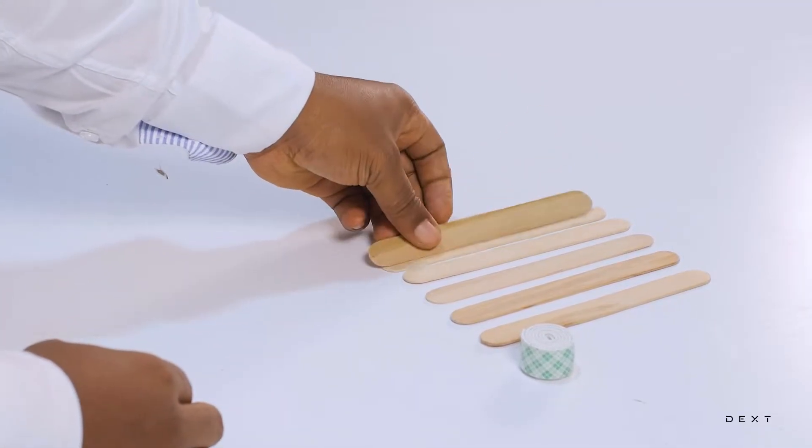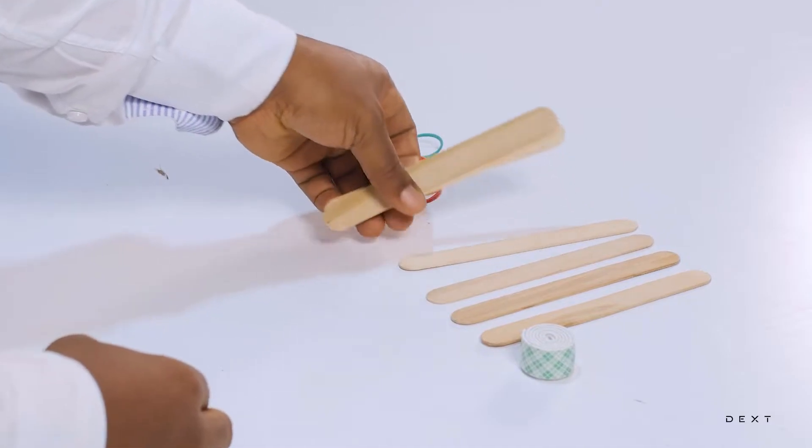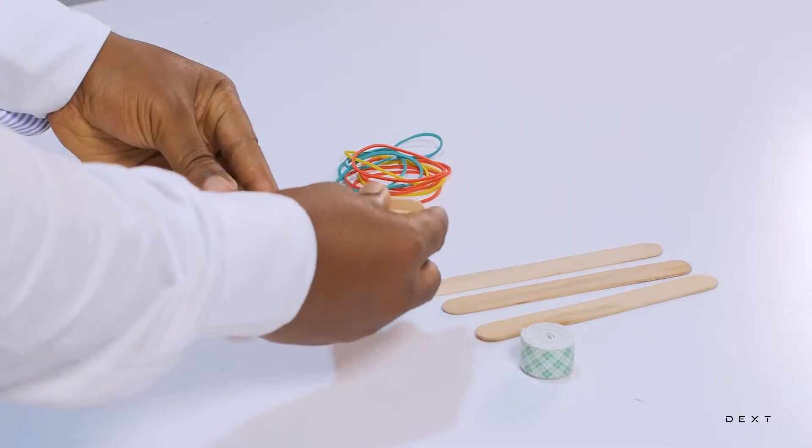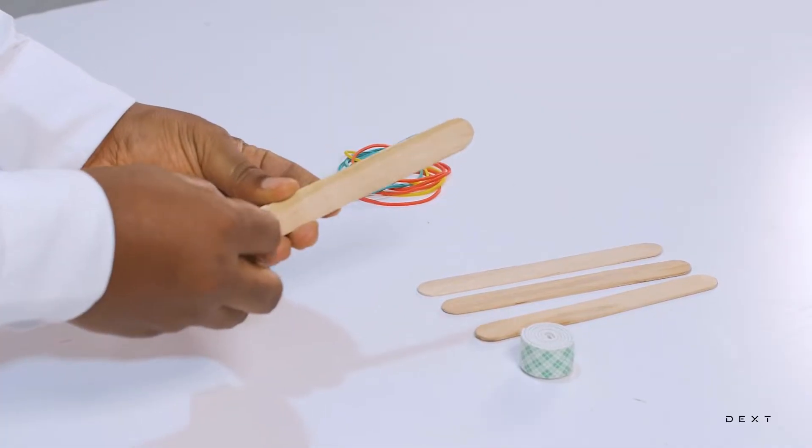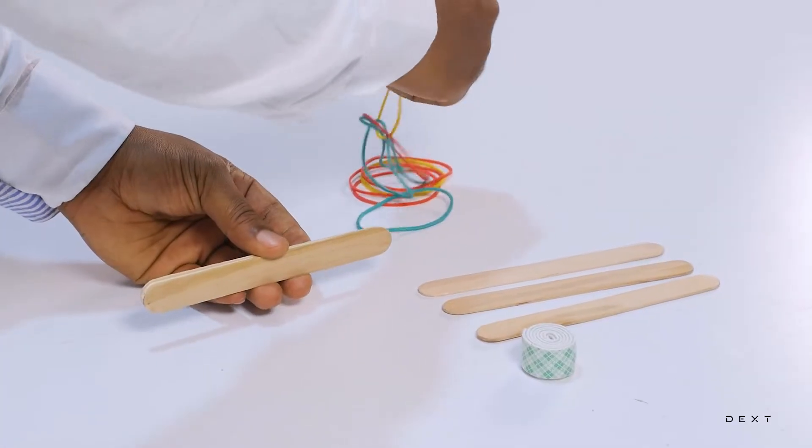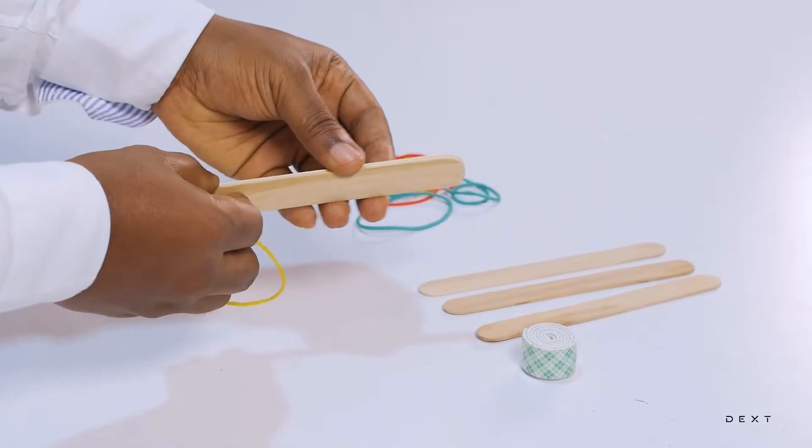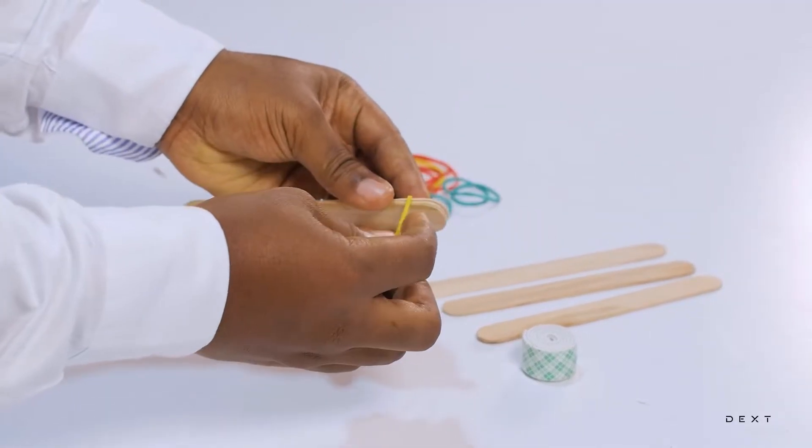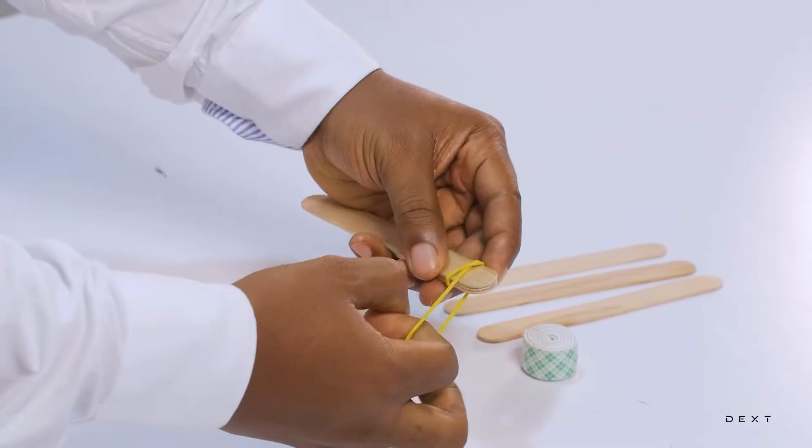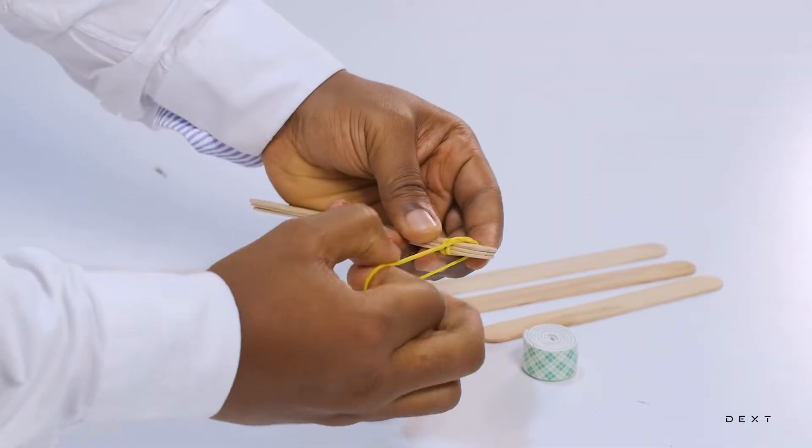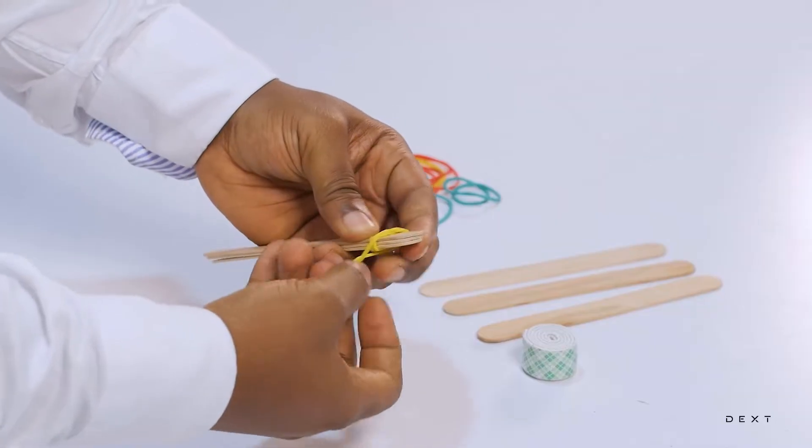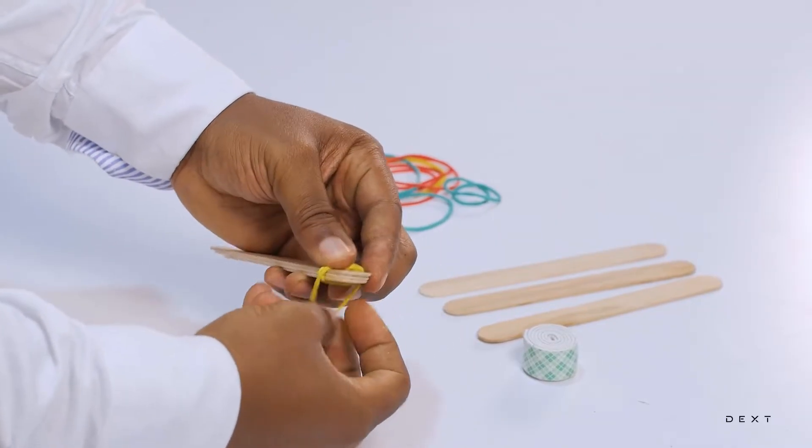So, the way I am going to show you, you are going to need three of the popsicle sticks. You are going to take one rubber band and you are going to tie them together. You are going to go over it several times to make sure it is nice and tight.